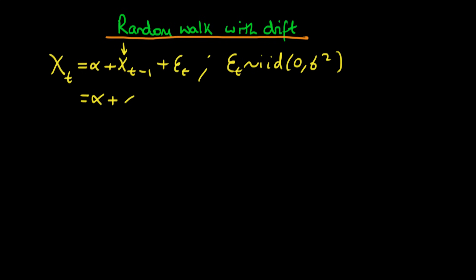So if we first of all substitute in for xt minus 1 we know that xt minus 1 is just going to be alpha plus xt minus 2 plus et minus 1 plus et.